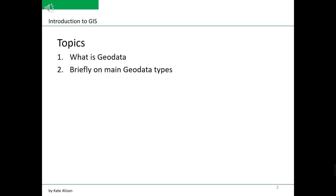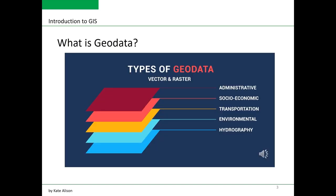Today we are going to learn about data that is used for GIS analysis, or Geodata. We are also going to talk about two main types of Geodata, which are vector and raster data types.